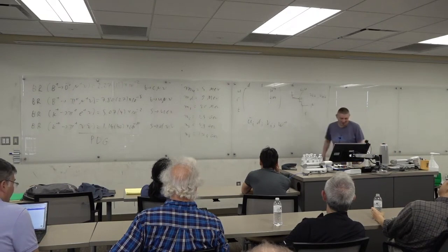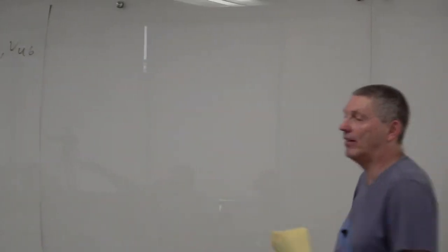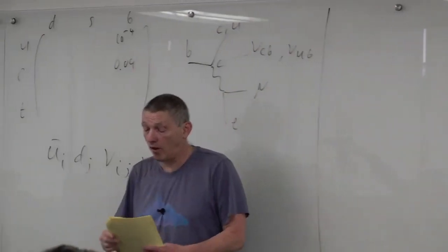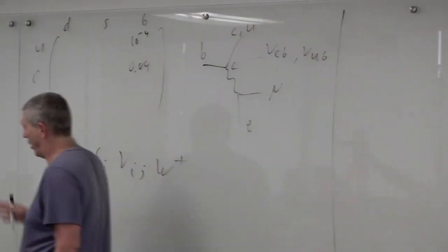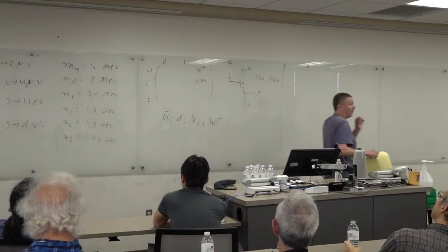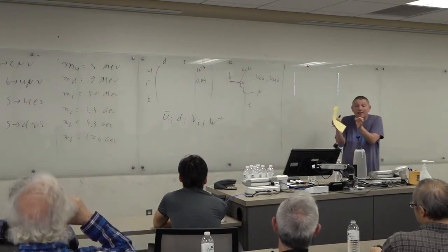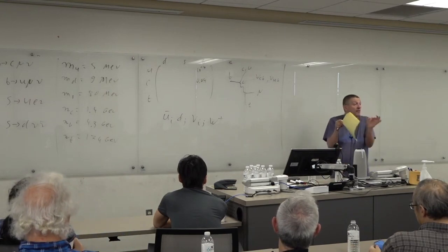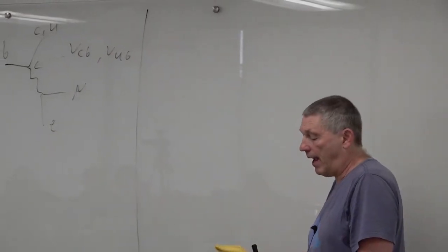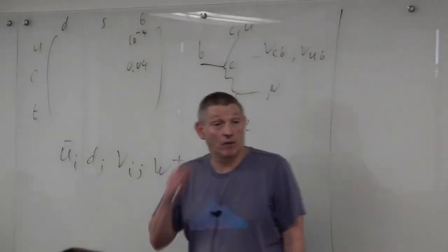I'd like to do one last point about the general story on the smallness of FCNC — flavor-changing neutral currents — and to solidify the point that the standard model is extremely fragile. It was built so that it really explains the data, and almost any small deviation in the model building results in something that cannot explain nature. Why don't we have FCNC at tree level?